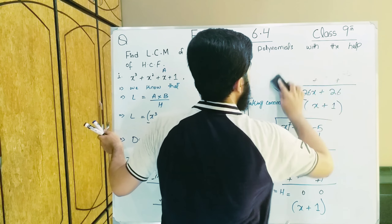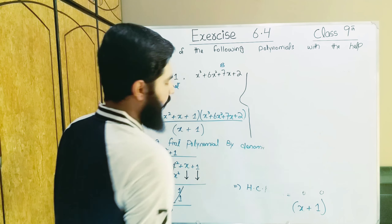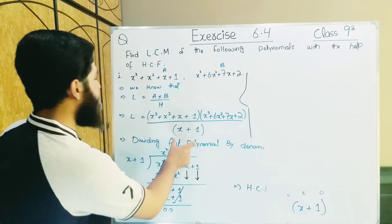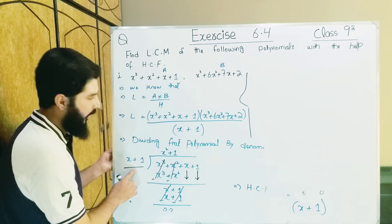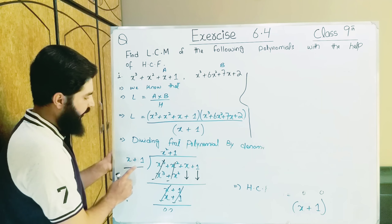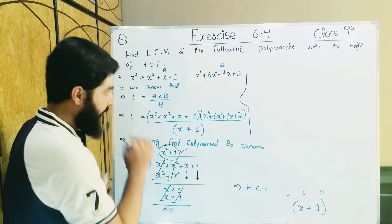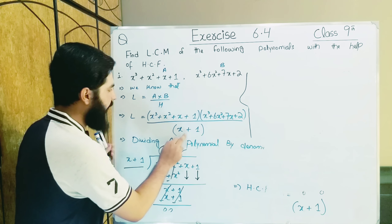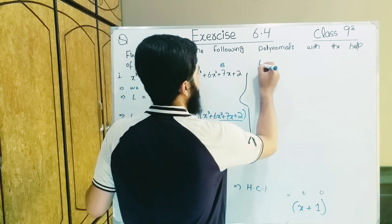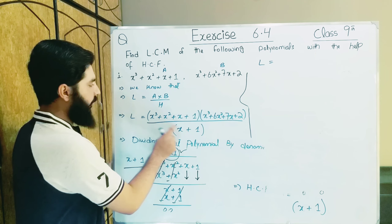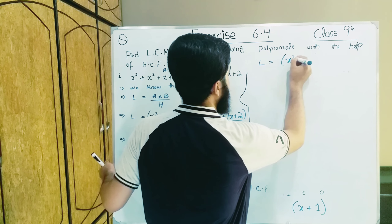Now we write the answer. Note that in HCF we used one value, but in dividing we used a different value. When we divide, the answer we got is x² + 1. So LCM = x² + 1, multiplied by the second polynomial.